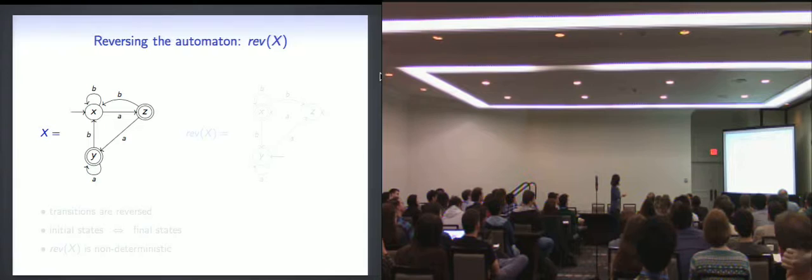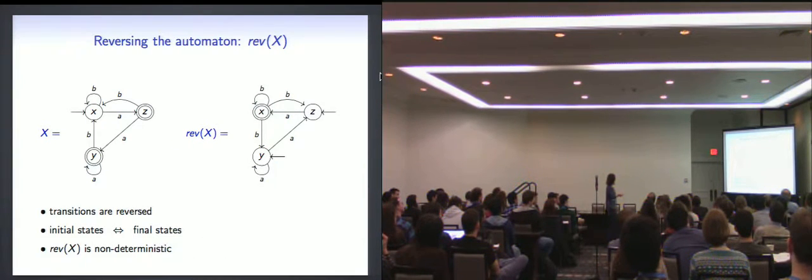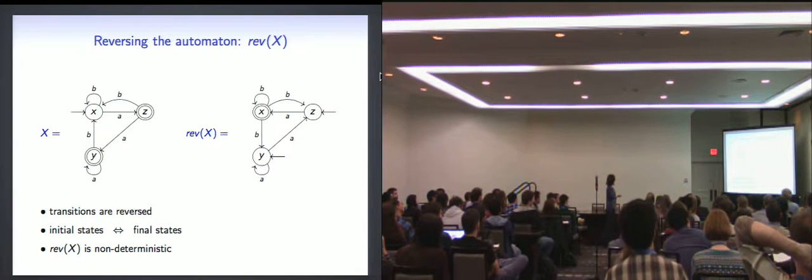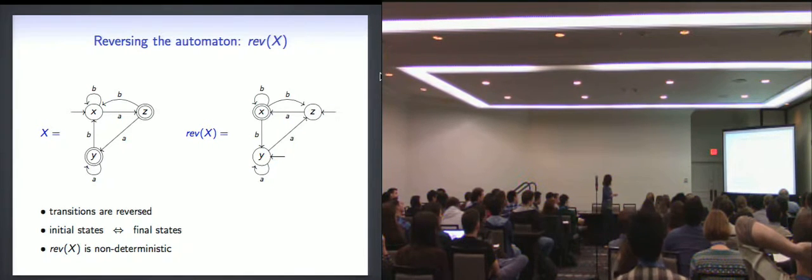So here's what the algorithm would do to this automaton. So we take this guy and we turn everything around. So we basically make the initial state final. We make the final states initial. And we reverse all the arrows. Okay?